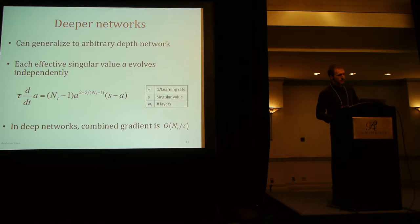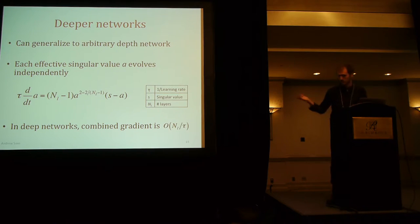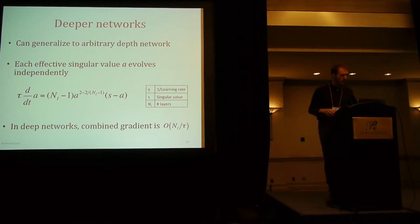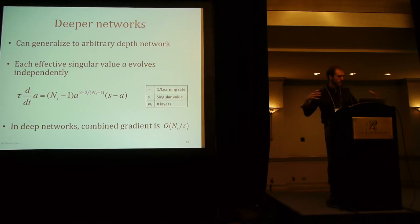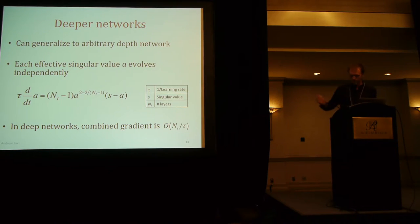What about deeper networks? It turns out we can take the same approach in deeper networks, and now each effective singular value is evolving according to a more complex differential equation. One thing we get from this is the combined gradient — summing up the gradient contribution from all the layers. That combined gradient is of the order of the number of layers, which will be relevant later.